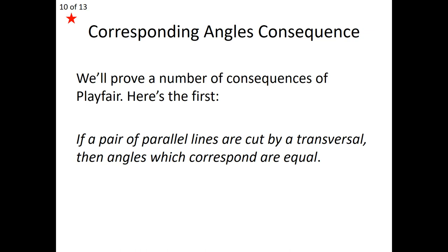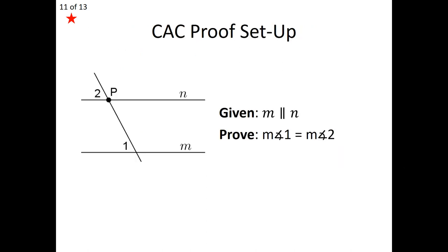Now let me introduce the Corresponding Angles Consequence, which is the converse of the Corresponding Angles Postulate. We have CAP as our first conditional, which leads us to its converse, CAC — the Corresponding Angles Consequence. We exchange our given and conclusion. This one states: if a pair of parallel lines are cut by a transversal, then angles which correspond are equal. So if we cut through a pair of parallel lines, the corresponding angles formed must be equal. Like any good conditional, we must prove this. We're given line N and line M already parallel, with angle 1 and angle 2 formed, and we must prove those corresponding angles are equal.